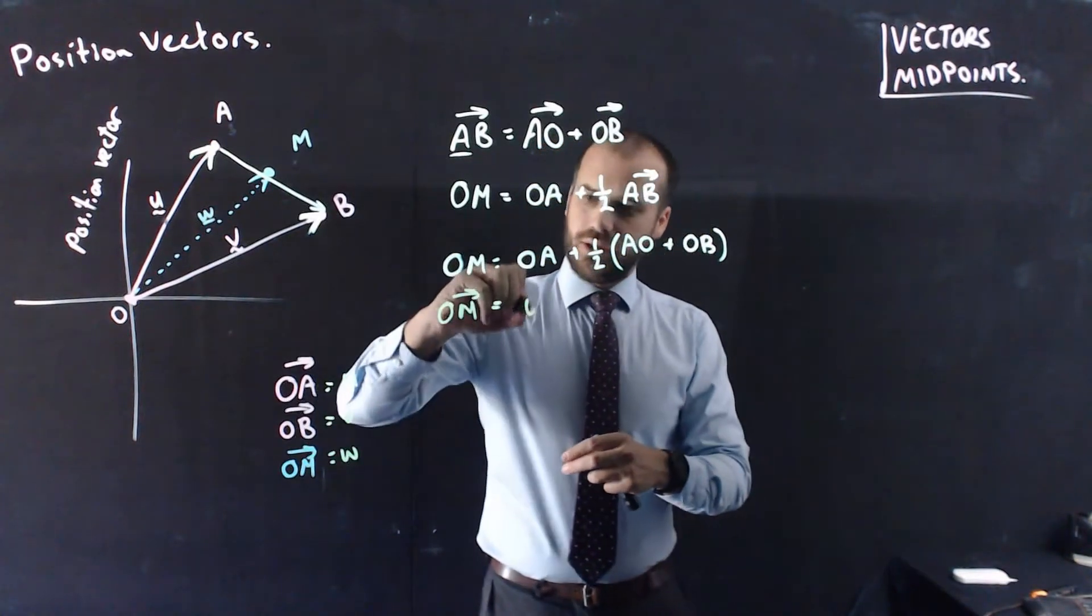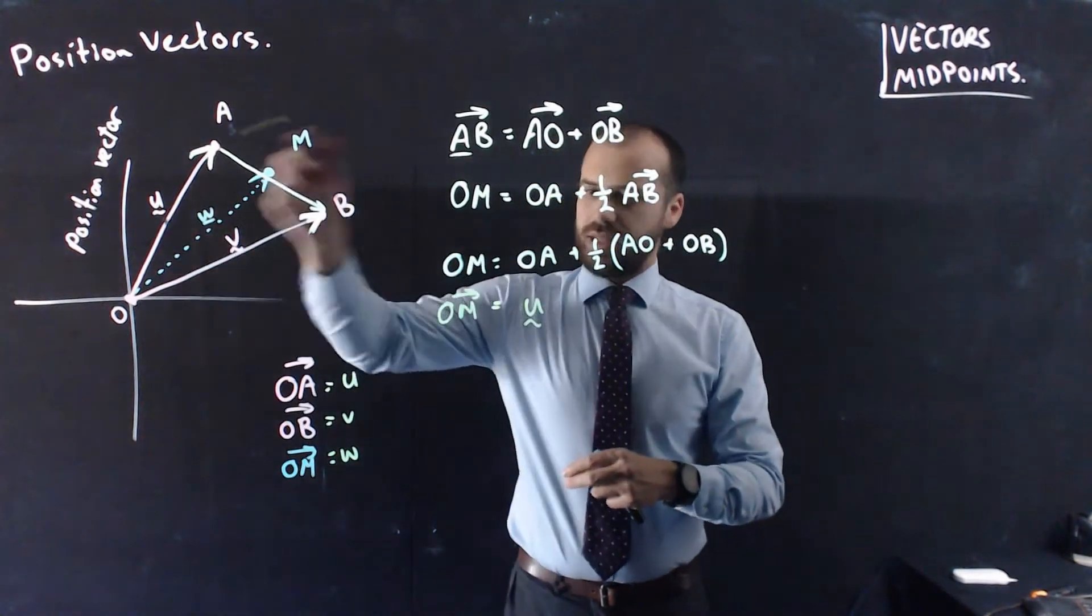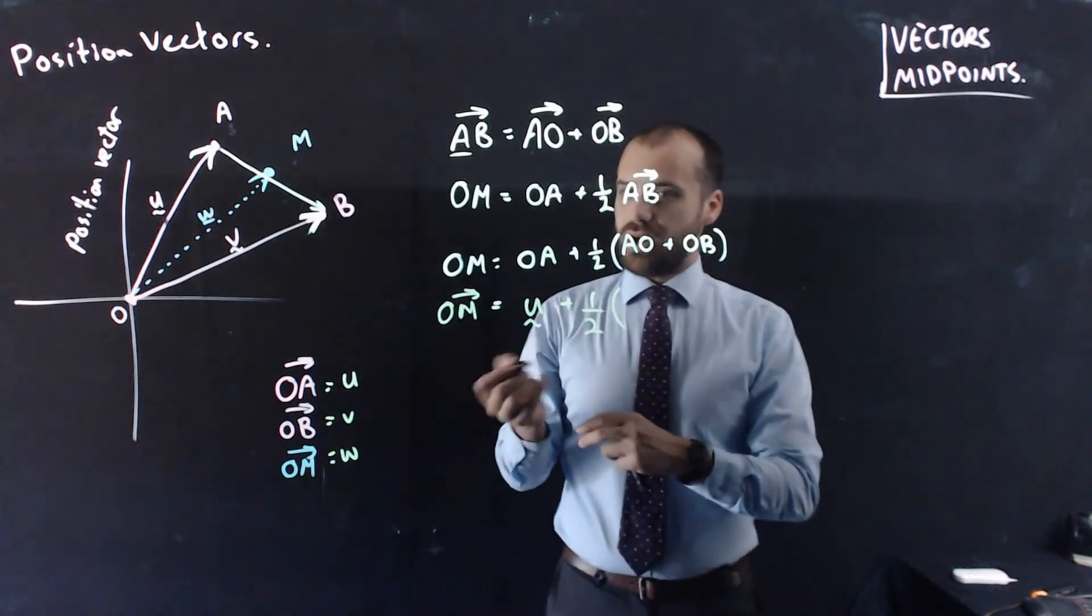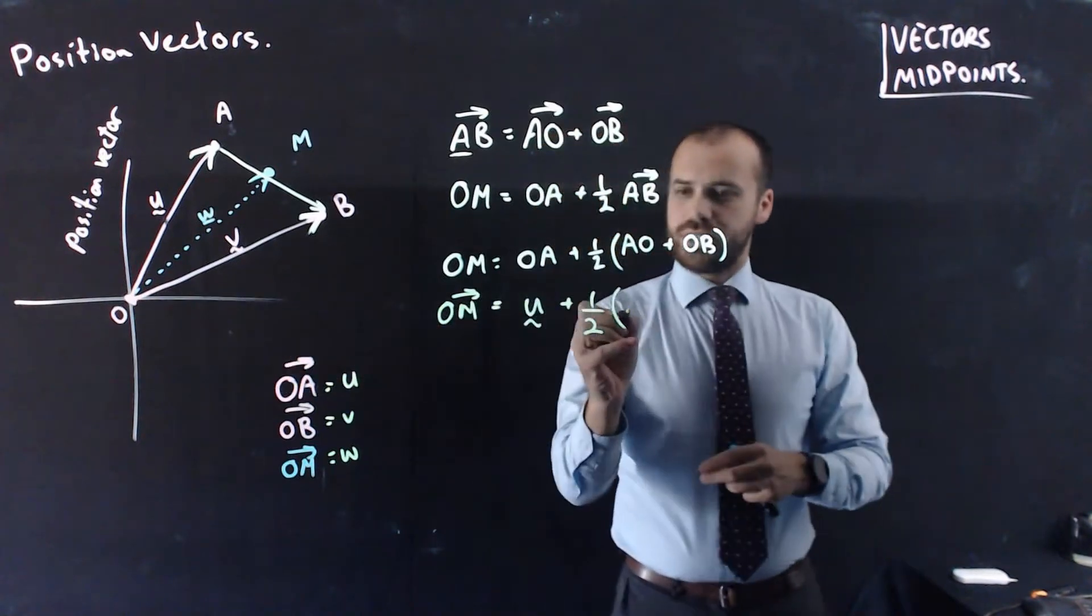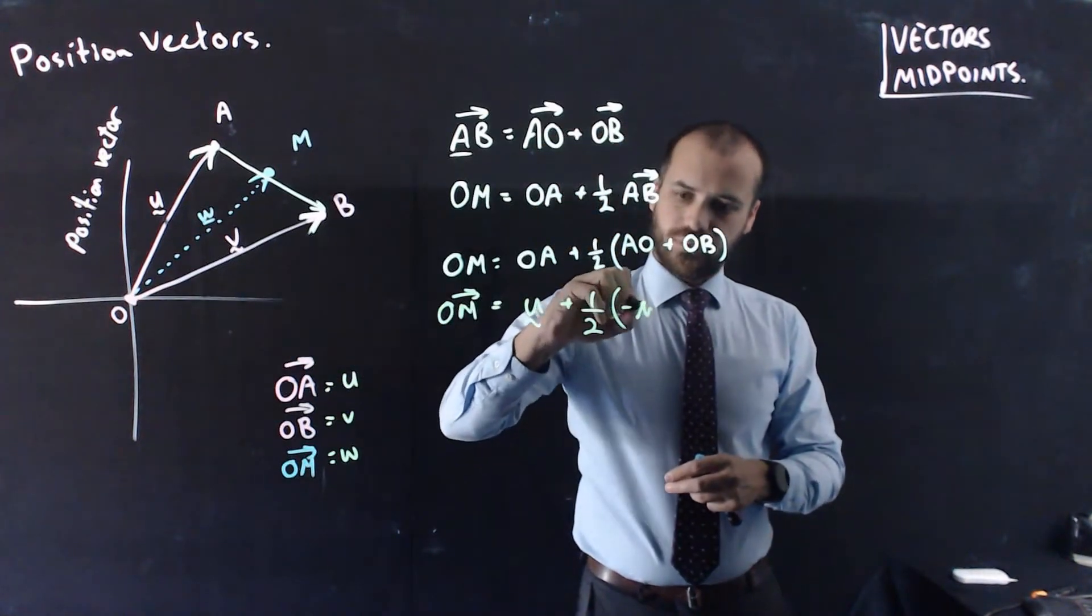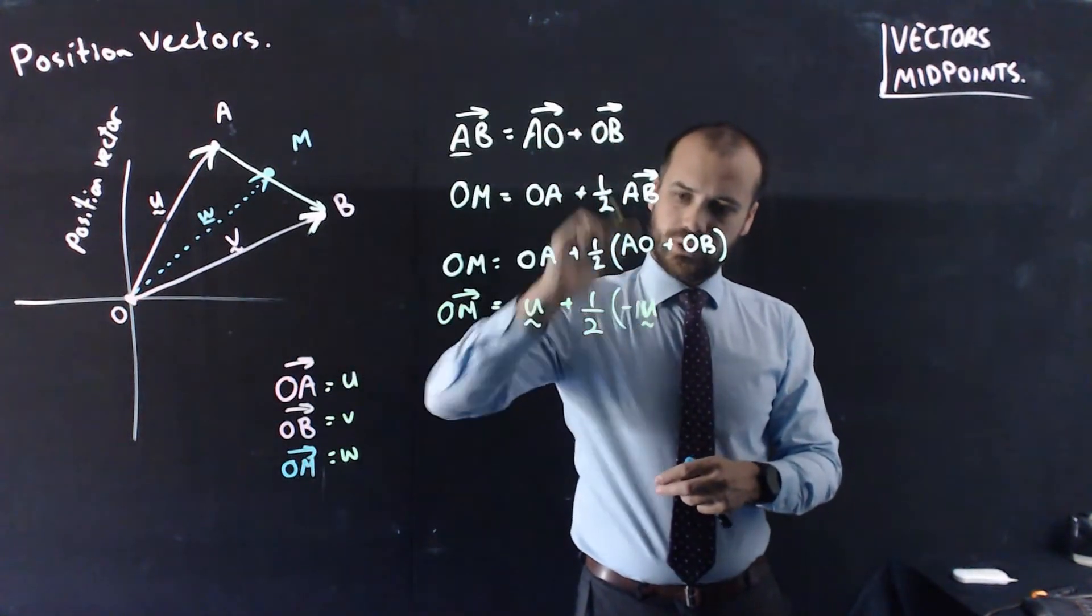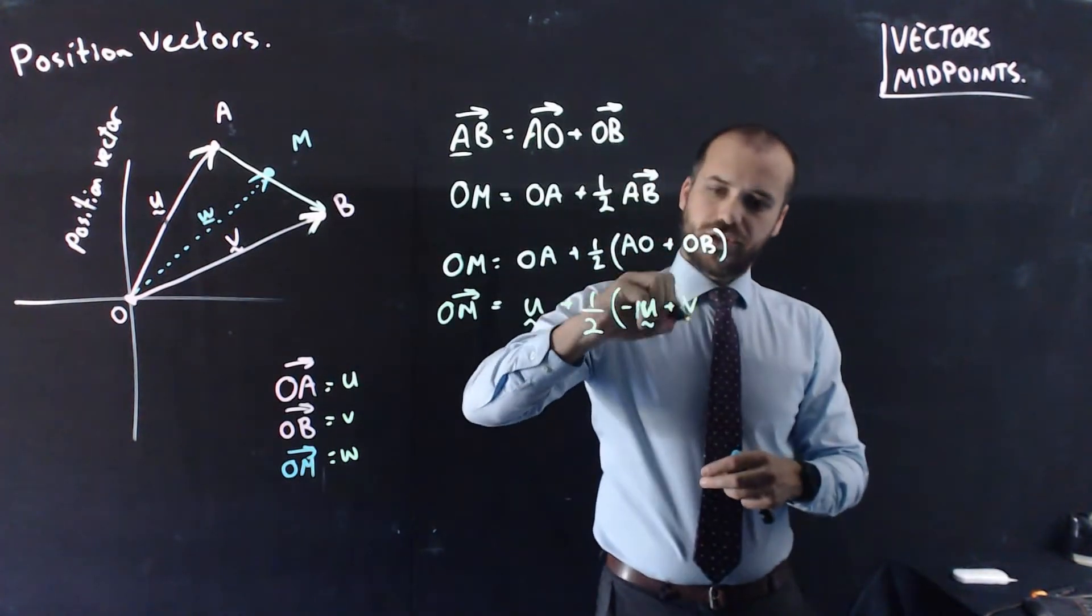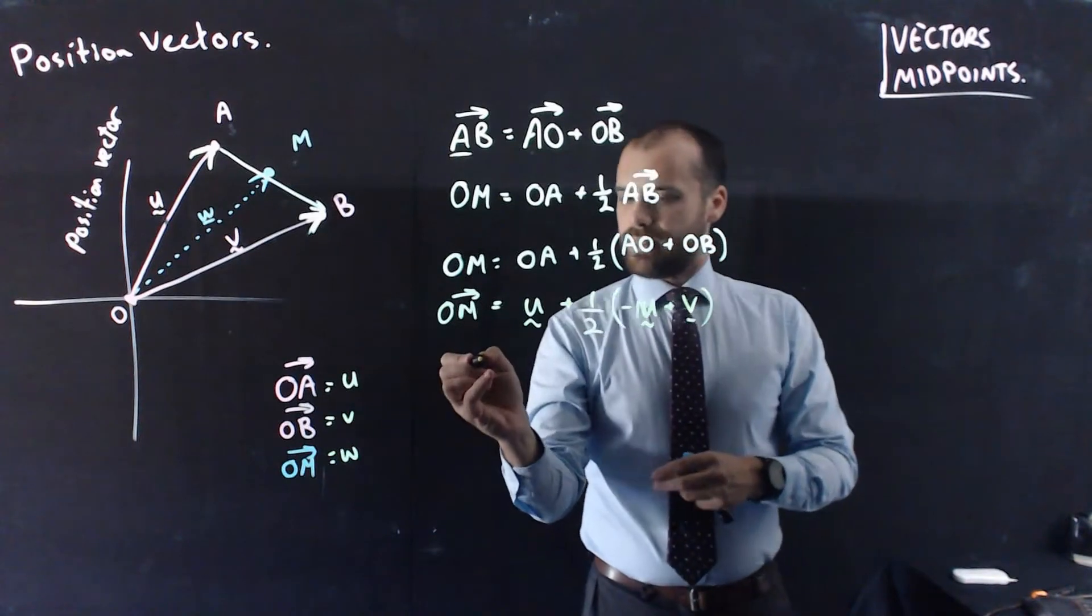Okay, so OA is U, which was that line there, plus half of AO, so AO, which is negative U, plus OB, which is V.